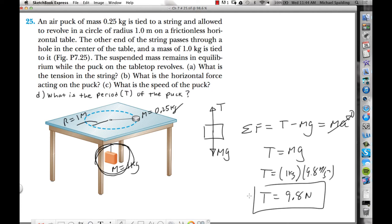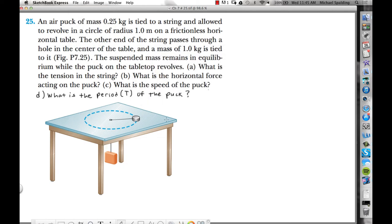Part B. What is the horizontal force acting on the puck? The horizontal force acting on the puck. So if we look at this puck here, there's only one force acting in the horizontal direction. What's the only force acting in the horizontal direction? Tension. And we already know what tension is. We just solved for it. The tension down here in this rope, we just found out that that tension down there is 9.8 newtons. So the tension up here must be 9.8 newtons because it's the same string. So the answer to part B is 9.8 newtons. The horizontal force is the tension equal to 9.8.